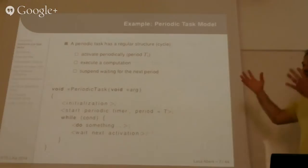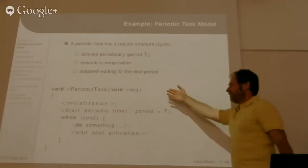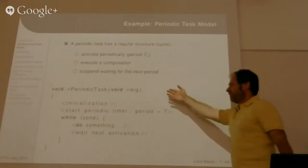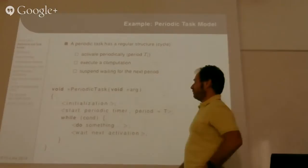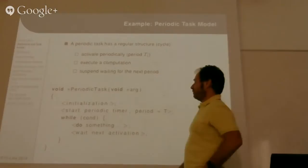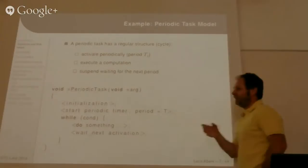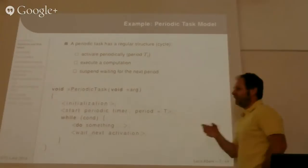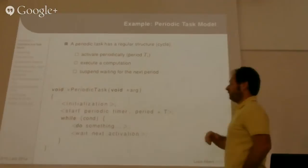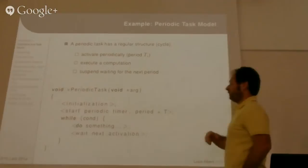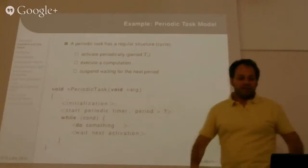Here is an example of what a periodic task looks like in practice. If we implement it using a thread, we have an initialization phase, then start some kind of periodic timer if the task is periodic, then enter a loop whose body is the body of a job. Inside the loop we do something — execute a job — and then block the task waiting for the next activation. A periodic task can be implemented using clock_nanosleep and sleeping for an absolute time, which is better than activating a timer.